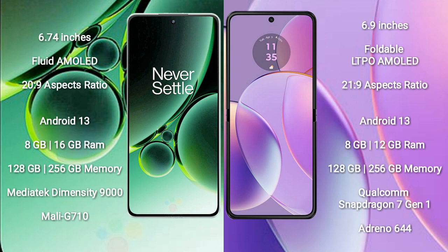OnePlus Nord 3 runs on the Android 13 operating system. It comes with 8GB to 16GB RAM and 128GB to 256GB internal storage, powered by the MediaTek Dimensity 9000 processor and Mali-G710 GPU.